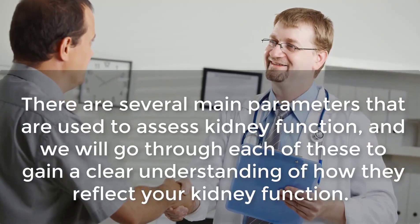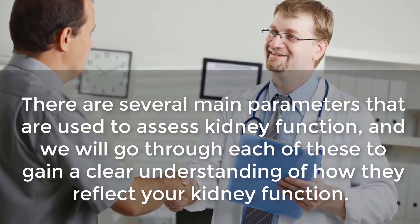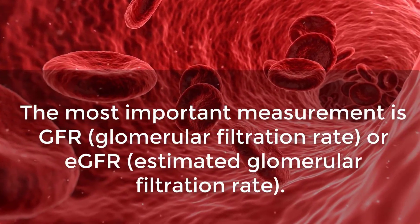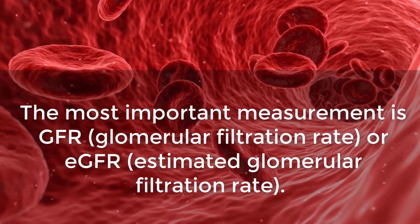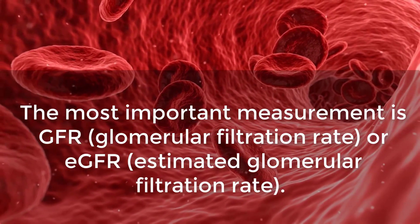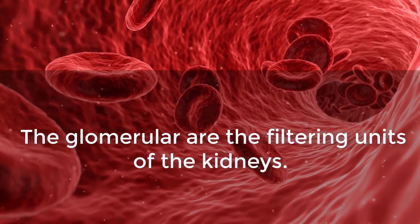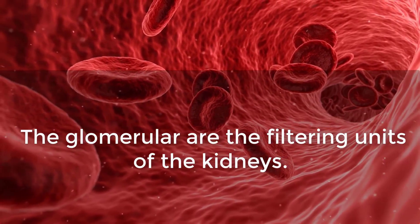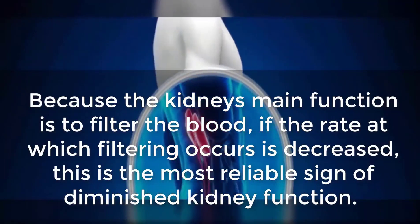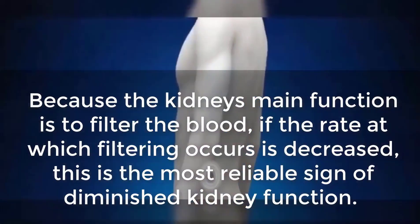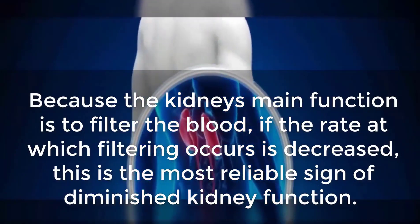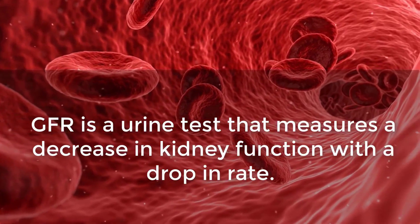There are several main parameters used to assess kidney function, and we will go through each of these. GFR — perhaps the most important measurement — stands for glomerular filtration rate, or eGFR (estimated glomerular filtration rate). The glomeruli are the filtering units of the kidneys. Because the kidney's main function is to filter the blood, if the rate at which filtering occurs is decreased, this is the most reliable sign of diminished kidney function.